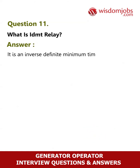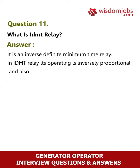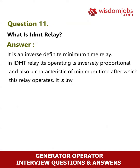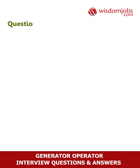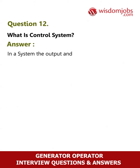Question 11: What is an IDMT relay? Answer: It is an Inverse Definite Minimum Time relay. In an IDMT relay, its operating time is inversely proportional and there is also a characteristic minimum time after which the relay operates. It is inverse in the sense that the tripping time will decrease as the magnitude of fault current increases.